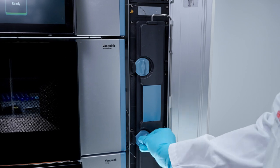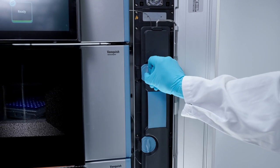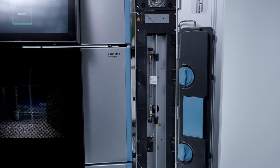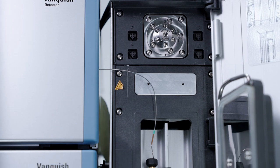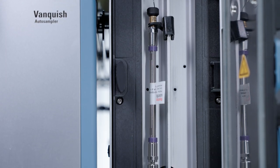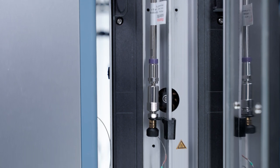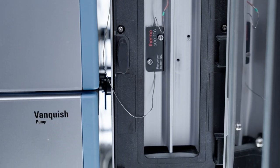Active and passive eluent preheating options and two-column thermostatic modes ensure superior UHPLC performance by matching column and eluent temperatures. Two additional column compartment valve positions extend the system's workflow versatility.